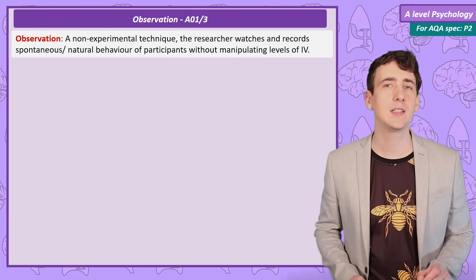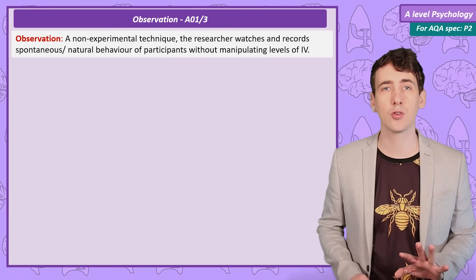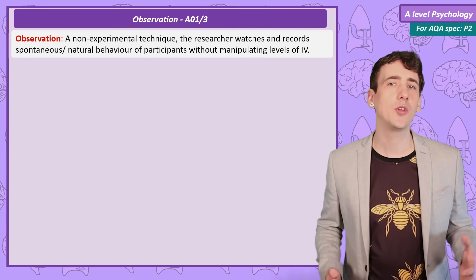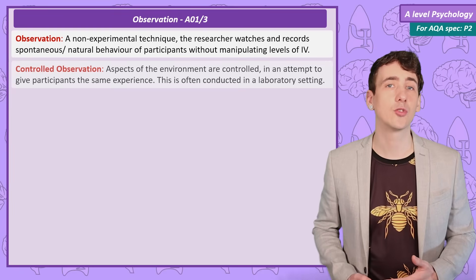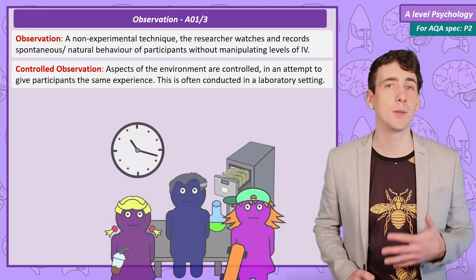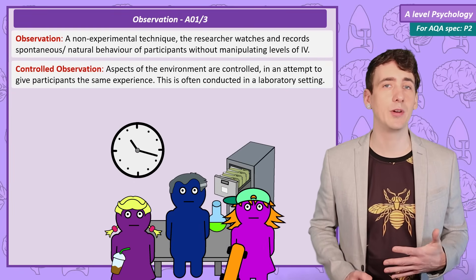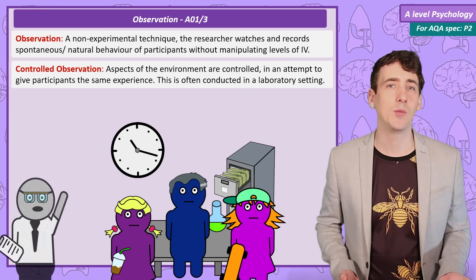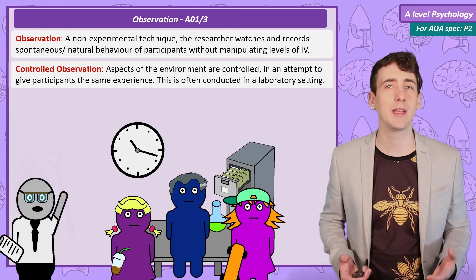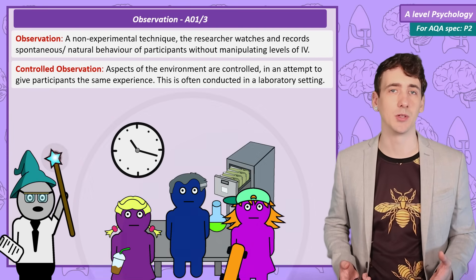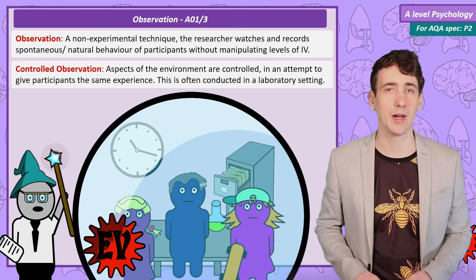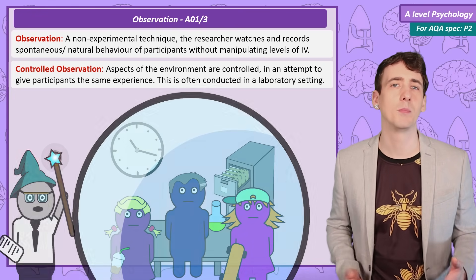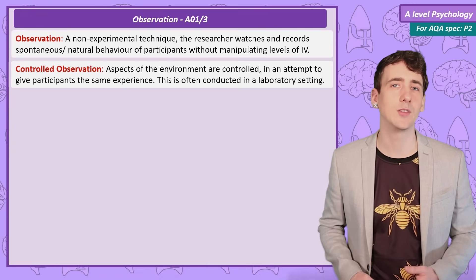One choice they need to make is between a controlled and naturalistic observation. A controlled observation is when we control the situation the participants experience and record their behaviours. This is done in a lab, which helps to control as many variables as possible, giving the participants the same experience. Think of Milgram, Bandura, and Ainsworth.